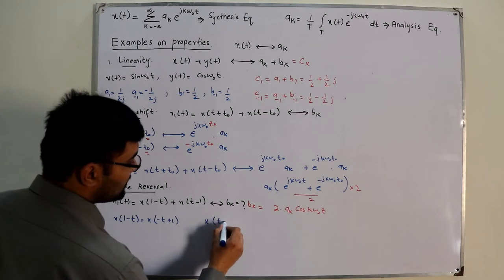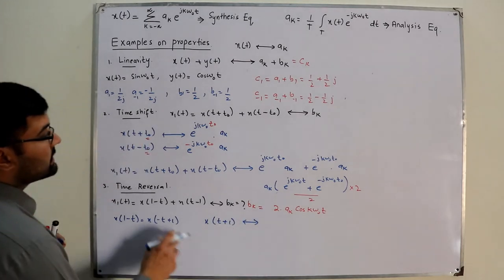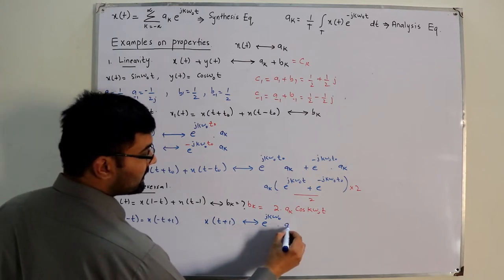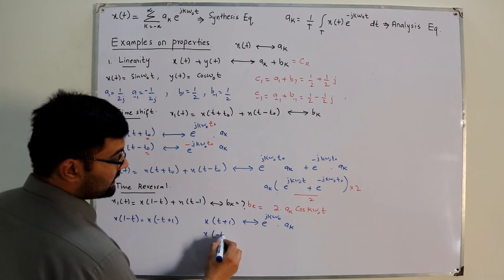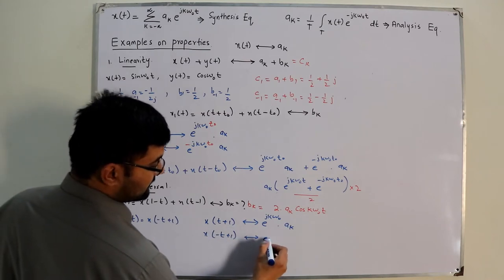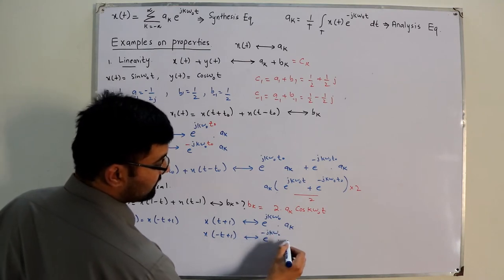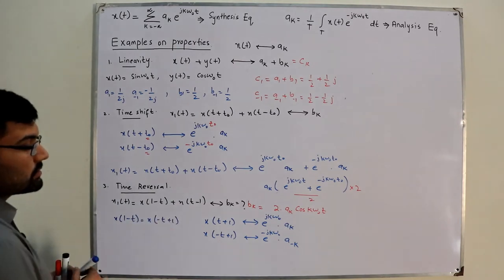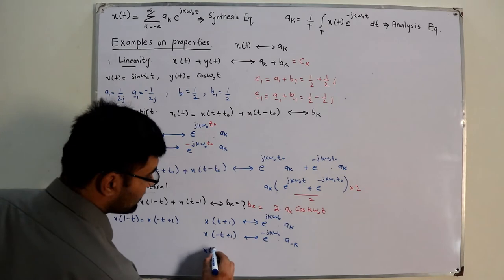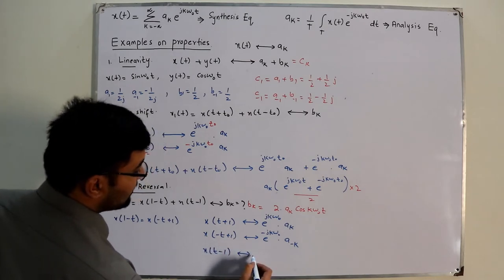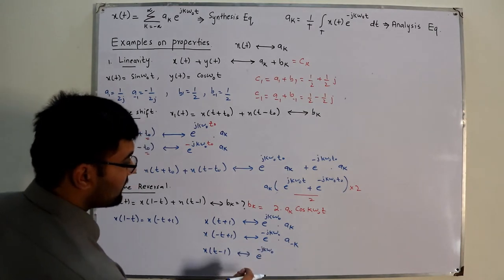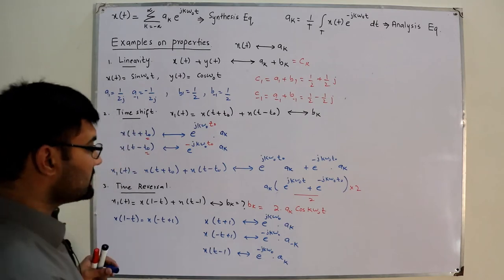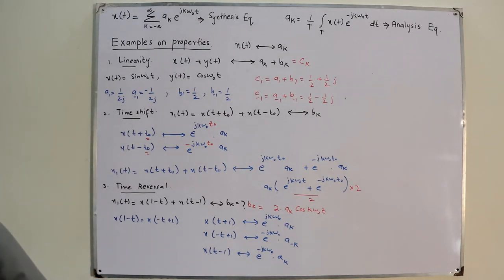We first shift: x(t + 1) gives Fourier coefficients e^(jkω₀)·ak, since t₀ = 1. Then time-reversing gives e^(-jkω₀)·a₋k. For x(t - 1), the Fourier coefficients are e^(-jkω₀)·ak.